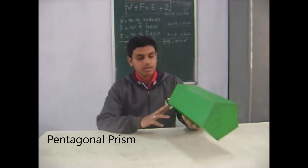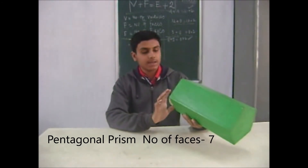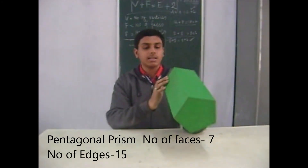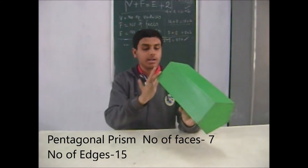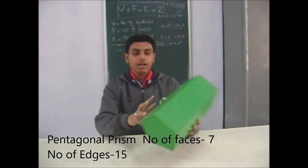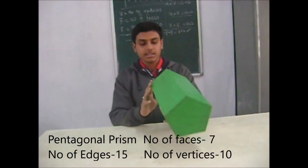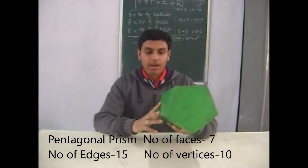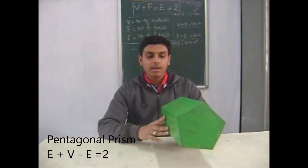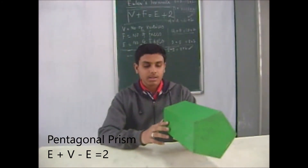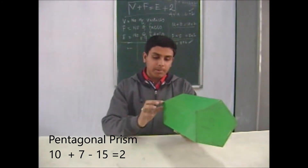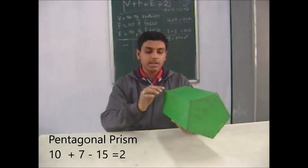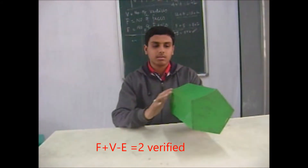It is a pentagonal prism. It has 7 faces — 1 through 7. It has 15 edges — 1 through 15. And it has 10 vertices — 1 through 10. According to Euler's formula, number of faces plus number of vertices minus number of edges equals 2. Then 10 plus 7 minus 15 equals 2. Then 17 minus 15 equals 2. Verified.